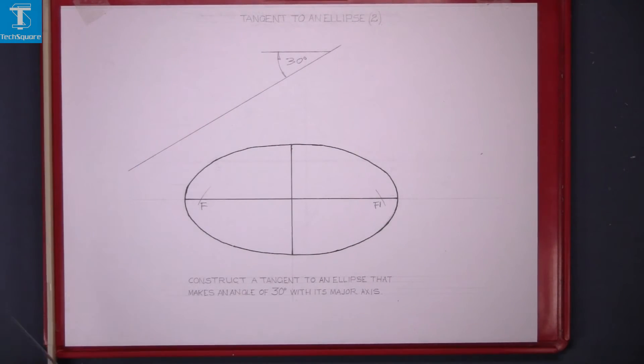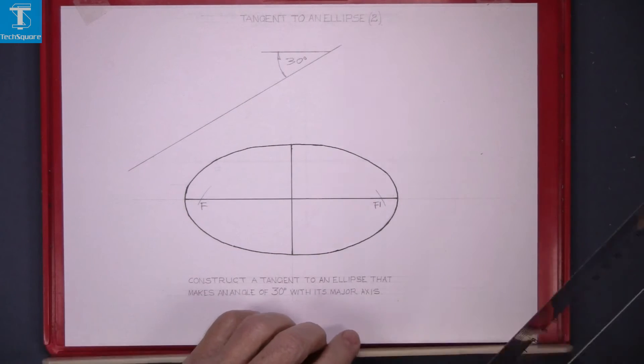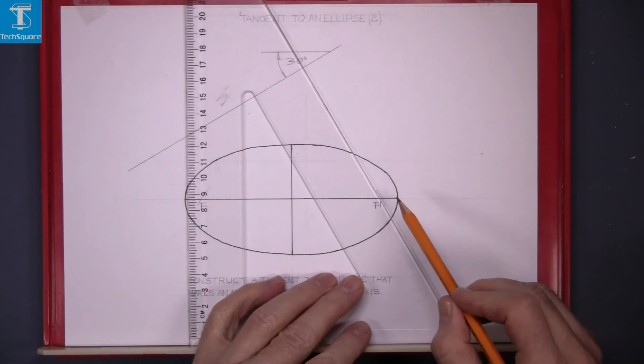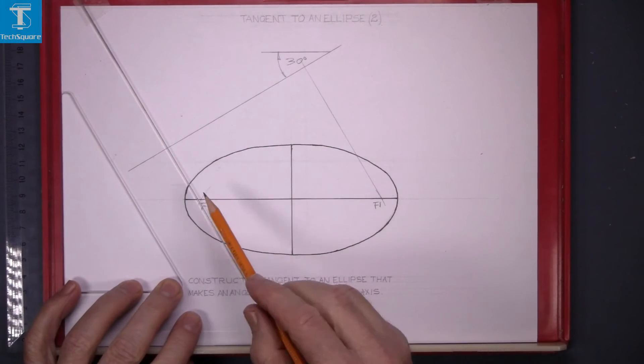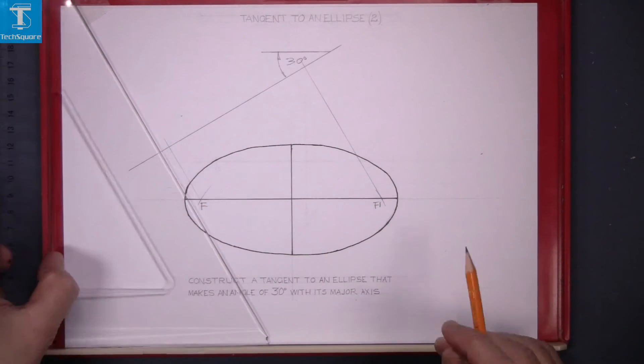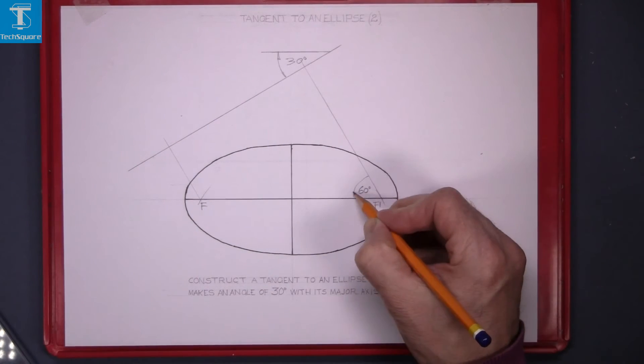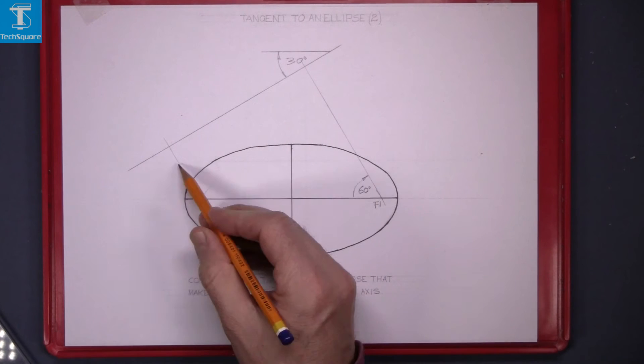Draw up from the focal points at 90 degrees to that line. That's going to be 60 degrees because the tangent is going to be at 30. So that's 60. Same over there.